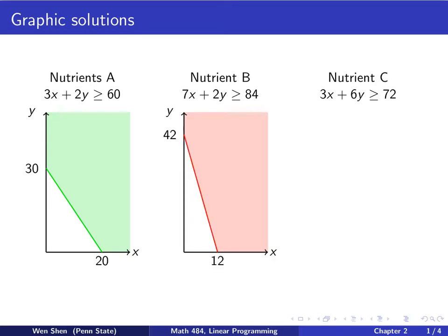For the second nutrient, we carry out in a similar way. 7x + 2y equals 84 gives us this straight line that's colored red. The region above this line that's shaded red, that's the region that satisfies the constraint for nutrient B.